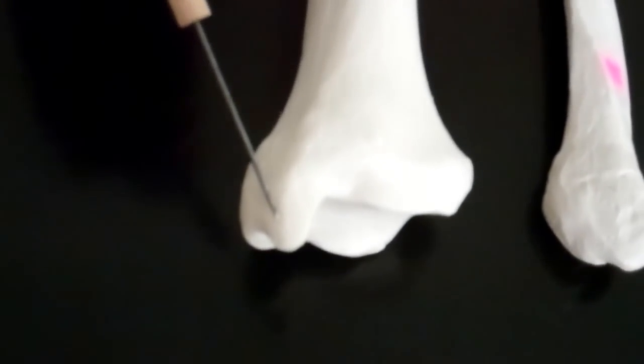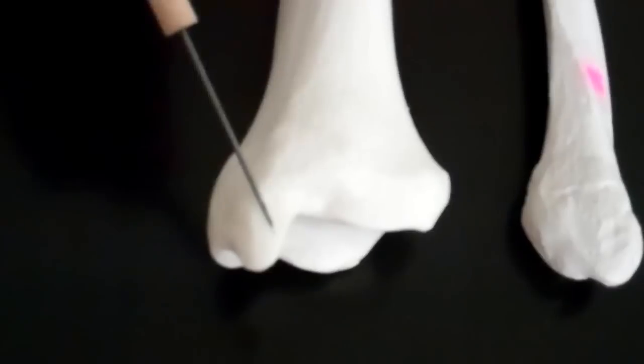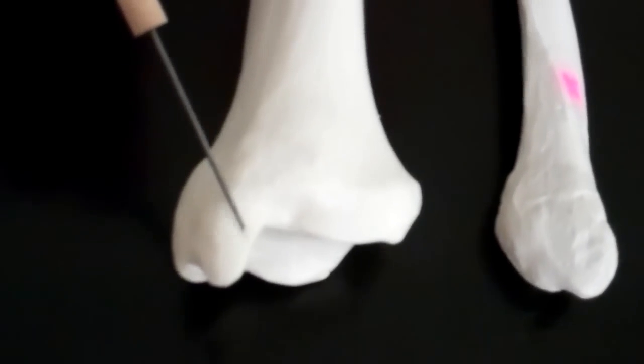The medial malleolus is on our tibia on the medial side. It's the only thing we need to know down here at the bottom where we articulate with the foot.